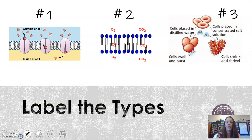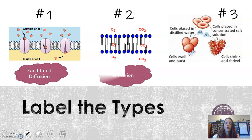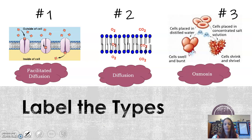Pause the video here and number 1, 2, 3 in your notes and label what each of these are. Number 1 should be facilitated diffusion — it's using a protein. Number 2 shows gases, so that's diffusion. And number 3 is showing water moving in and out of red blood cells, so that's osmosis.